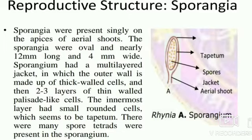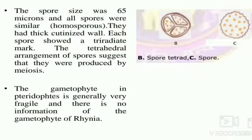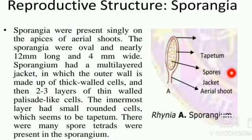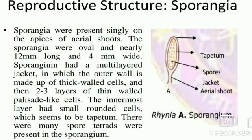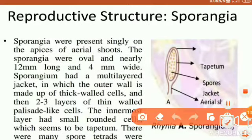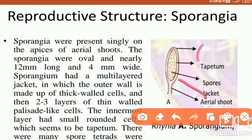The outer wall is made up of thick-walled cells. The innermost layer had small rounded cells which appear to be tapetum, and there were many spores present inside. Looking at the sporangia diagram: this is the tapetum, this is the spore, the pear-shaped structure has a jacket present, and this is the aerial shoot. The outer layer is the jacket cell.